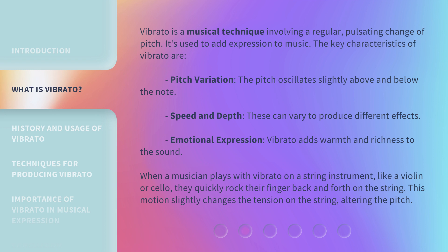When a musician plays with vibrato on a string instrument, like a violin or cello, they quickly rock their finger back and forth on the string. This motion slightly changes the tension on the string, altering the pitch.